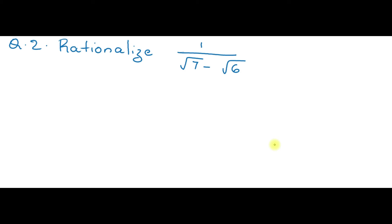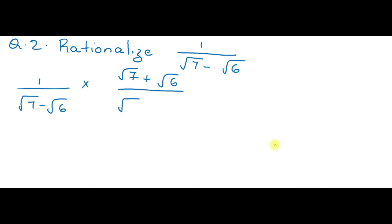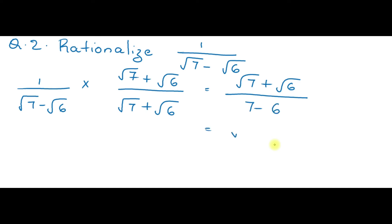The second rationalization question is 1 by root 7 minus root 6. Multiply and divide by root 7 plus root 6. I can write it as 1 divided by root 7 minus root 6, into root 7 plus root 6 over root 7 plus root 6. This gives root 7 plus root 6 divided by 7 minus 6, which equals root 7 plus root 6 divided by 1, equal to root 7 plus root 6.